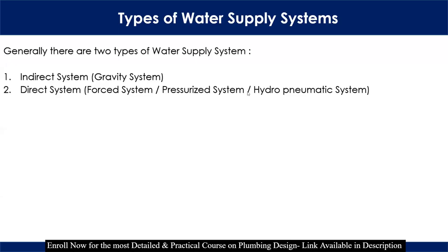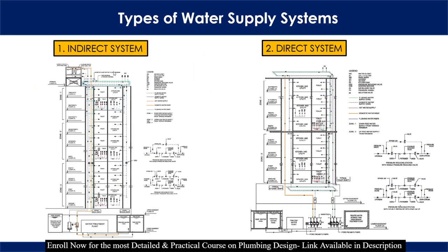What are the types of water supply system? Generally there are two types: one is the indirect system, which is known as a gravity system, and the second is the direct system, also known as the force system or pressurized system and hydropneumatic systems. These are the two schematics for the indirect system.